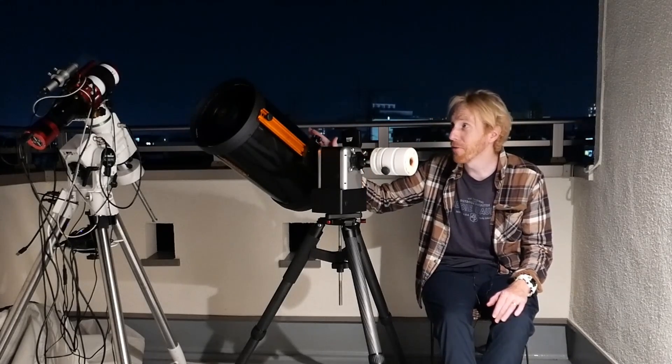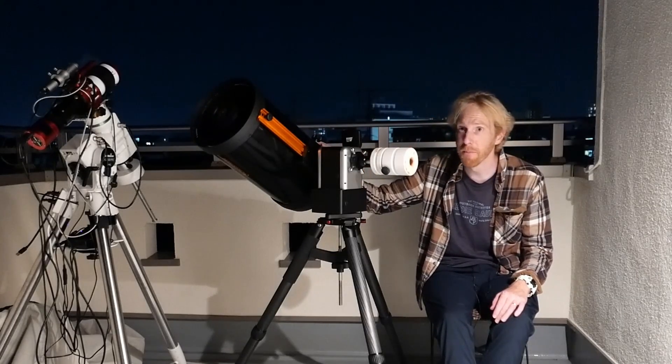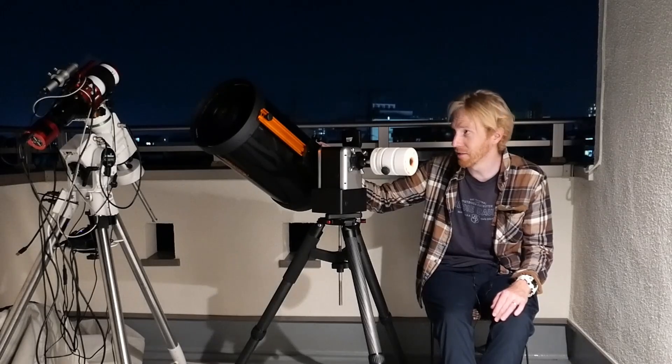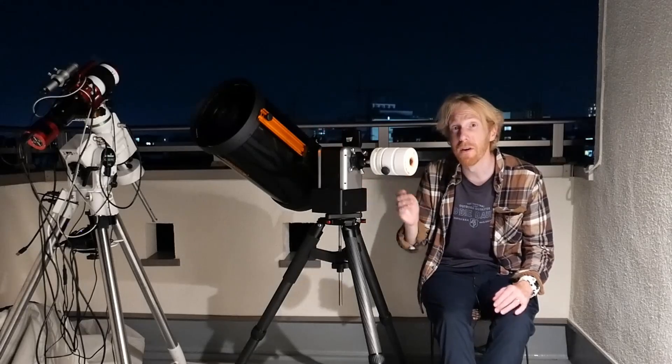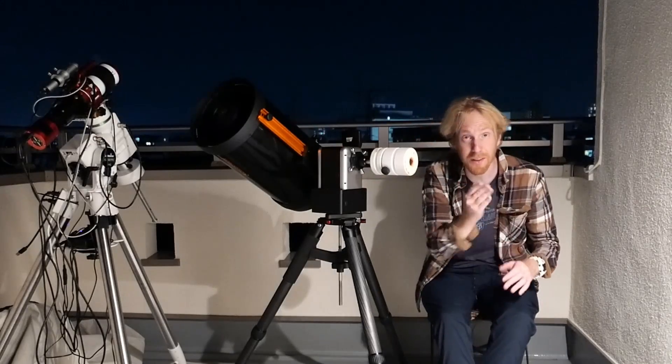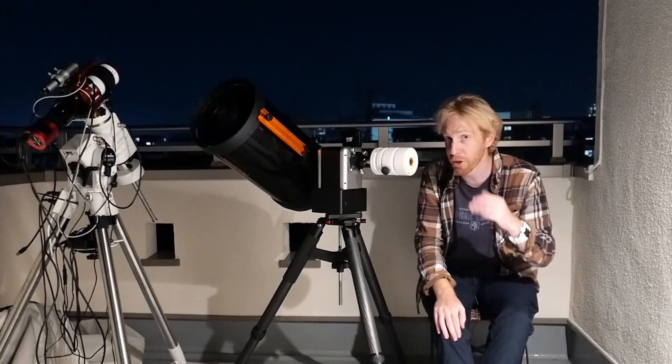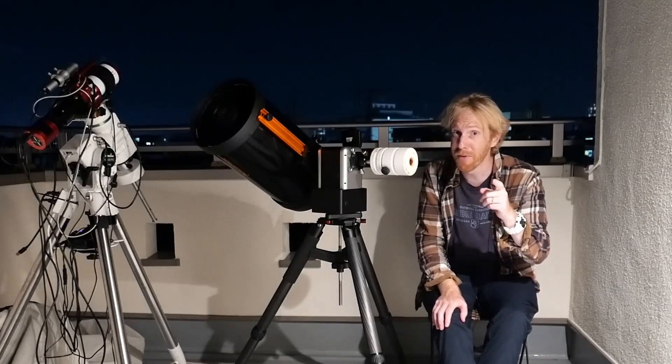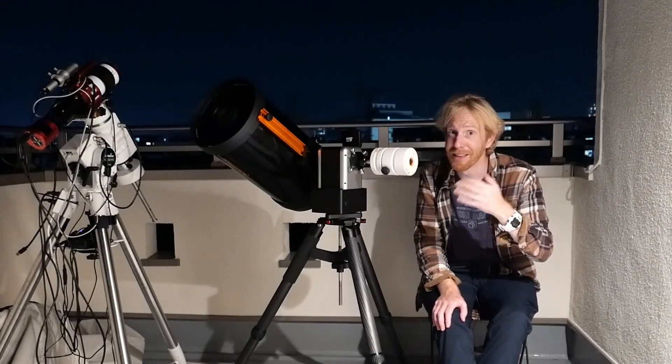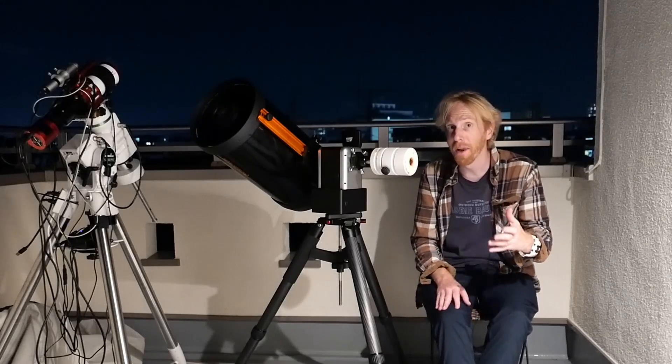And this one is my favorite for astronomy in terms of Schmidt-Cassegrain because it's the C9.25. And it so happens that its mirror, its main mirror, is less curved than other main mirrors of typical Schmidt-Cassegrains. And that means it's easier to manufacture.